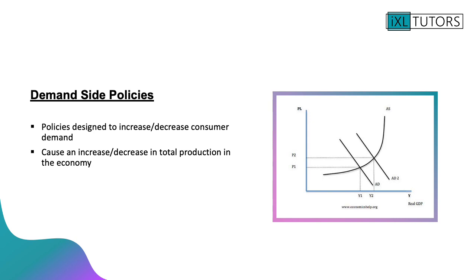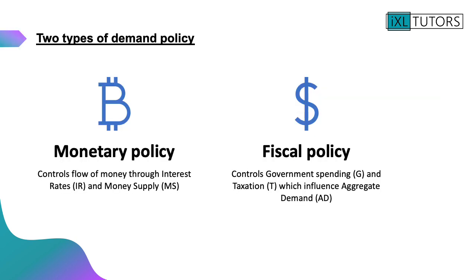They cause an increase or decrease in total production in the economy and they cause aggregate demand to shift. There are two different types of demand side policy: we have monetary policy and we have fiscal policy. Monetary policy controls the flow of money through interest rates and the money supply. Fiscal policy controls government spending and taxation which influence aggregate demand.